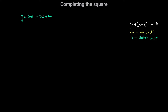We know that the completed square form for a quadratic expression can be written as y is equal to a times (x minus h) squared plus k, where h comma k are the coordinates of the vertex of the parabola and a is the stretch factor.